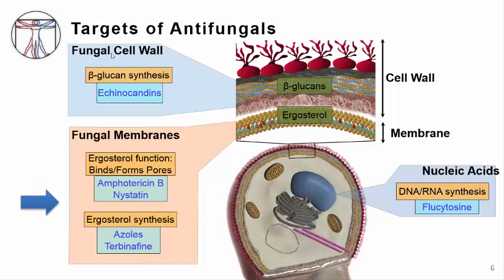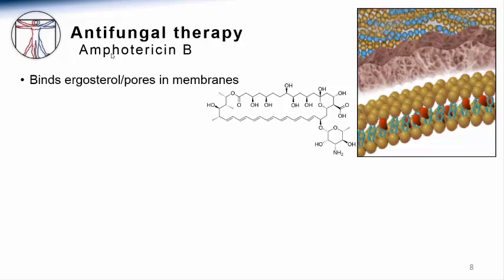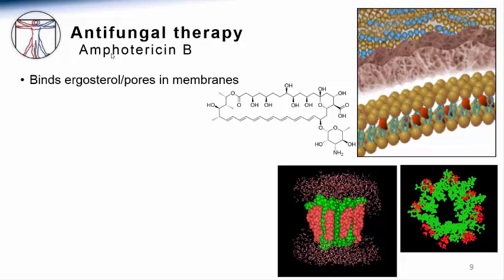Ergosterol is the fungal equivalent of the cholesterol that composes a large amount of mammalian cell membranes. One of the first major systemic antifungals discovered was amphotericin B. Amphotericin B binds and disrupts one of the principal components of fungal cell membranes, this lipid-like molecule called ergosterol. Since we do not have ergosterol in our cells, amphotericin B has some degree of specificity to bind and harm fungal cell surfaces. However, likely due to cross-reactivity with mammalian membrane lipids, amphotericin B does display toxicity to the human host. These are diagrams representing the actual pores predicted to form by amphotericin B in the fungal cell membrane, disrupting the structure and causing fungal cell death.